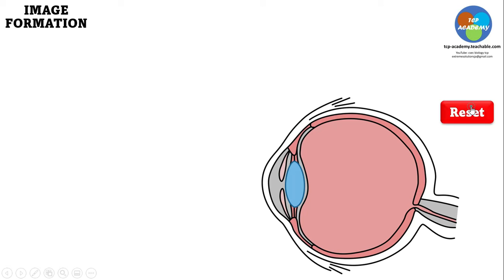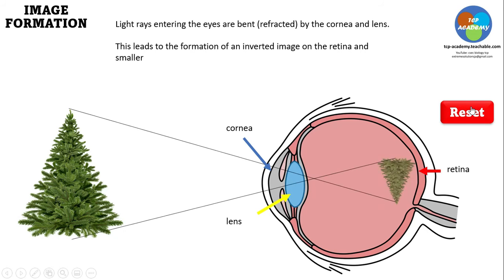Let's take a look. Here we go. We're seeing this Christmas tree, and as the light from the tree enters the eye, what happens is that it's bent by the cornea and the lens, and is inverted and appears smaller in the eye, right on the retina. The information is then sent to the brain where it is corrected — it's inverted, or one would say, takes the correct position.